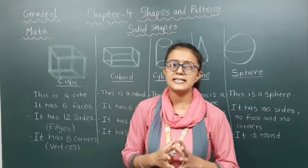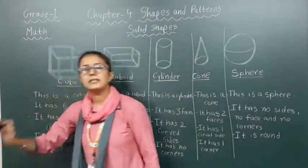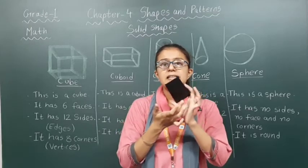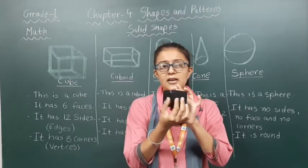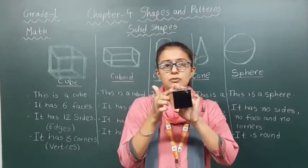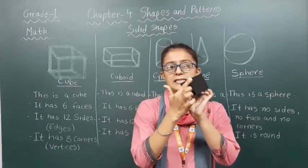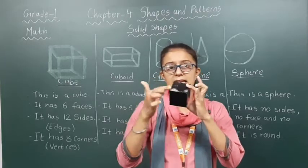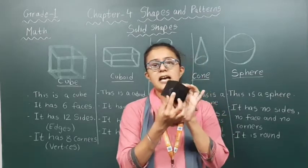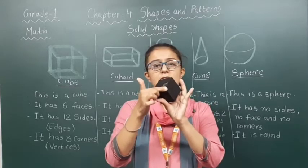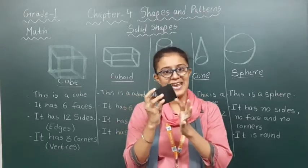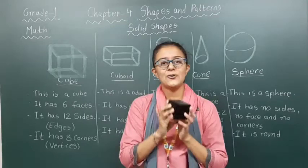Let's see one example for the cube. This is a cube. It is made up of 6 squares. Where the squares are meeting are known as edges — counting 1 through 12, a cube has 12 edges. And where these edges are meeting are known as vertices — counting 1 through 8, a cube has 8 vertices.